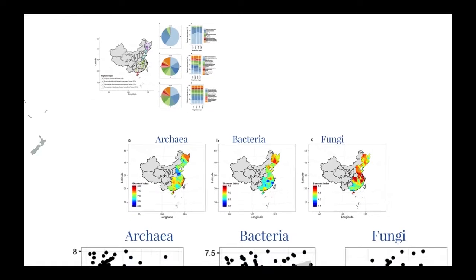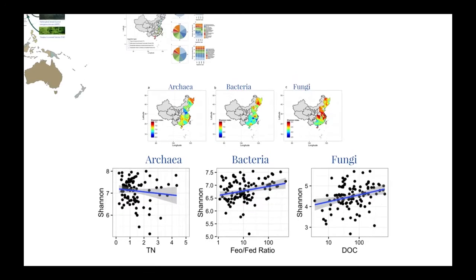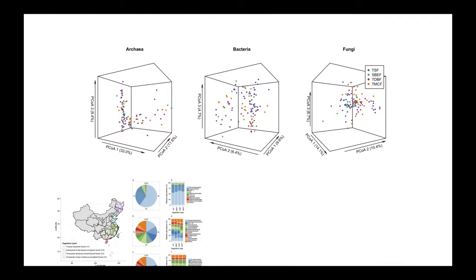The bacterial diversity was influenced by the ratio of the active iron oxides to the free iron oxides. The archaea community structure was not significantly different across the vegetation types, but the bacteria and fungi community structures were significantly different.